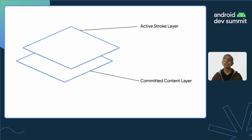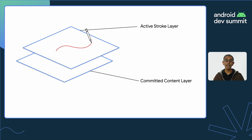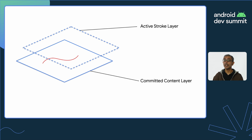Think of it as two different layers, one on top of the other. The top layer is front-buffered and it's called the active stroke layer. The bottom layer, where the rest of your app's UI is normally drawn, is multi-buffered and it's called the committed content layer. Starting with the stylus input, this all happens on the front-buffered layer. We draw a stroke, still rendering it as fast as we can, and then when we lift up, it is committed to the content layer behind it. So you get the best of both worlds — a fast response to the stroke being drawn, and multi-buffered rendering behind it.